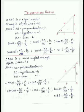In trigonometric ratio, we discuss the relation between the angle and sides of a right angle triangle. Mind it — angle and sides of a right angle triangle. In general, we work in a 90-degree right angle triangle.